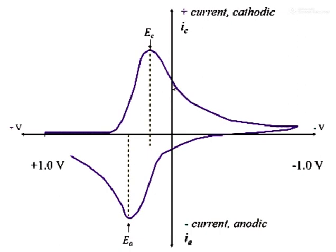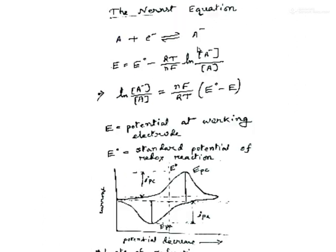In the cyclic voltammogram, as potential decreases, reduction of the species causes current to increase, then decrease after the peak. Between the peak cathodic potential and peak anodic potential lies the standard potential of the redox reaction. The peak cathodic potential is smaller than the standard potential, whereas the peak anodic potential is greater than the standard potential.